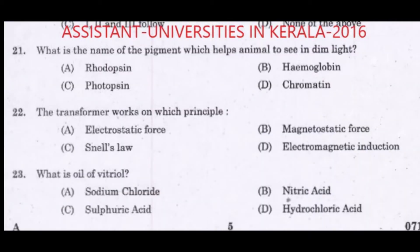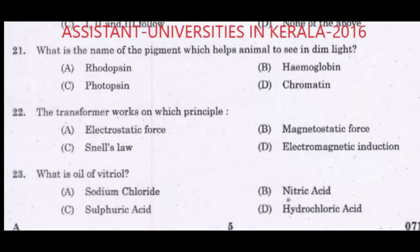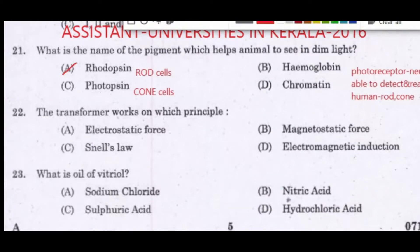First question: What is the name of the pigment which helps animals to see in dim light? Option A: rhodopsin. Option B: hemoglobin. Option C: photopsin. Option D: chromatin. The answer is Option A: rhodopsin.